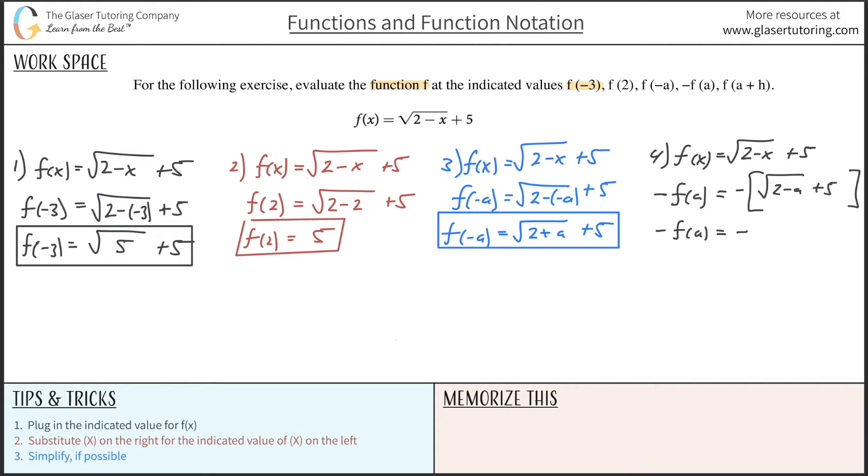It'd be negative. Actually, I mean, we could probably even leave it. But if you want to distribute, the negative sign would be negative radical 2 minus a minus 5. And that's fine if you want to do it that way. Great.